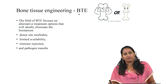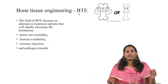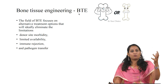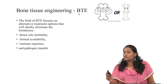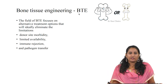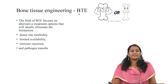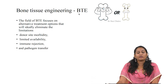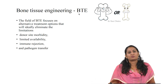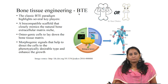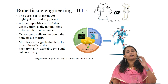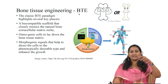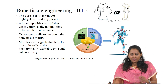In order to overcome all these limitations, we need a bone graft substitute to enhance bone regeneration or to repair bone defects. The field of bone tissue engineering focuses on an alternative option that will completely eliminate the limitations faced in current bone grafting procedures. Over 2 million surgical procedures are performed every year for bone grafting, where bone is considered the second most transplanted tissue after blood. This diagram explains the classic bone tissue engineering paradigm, which highlights several key players.